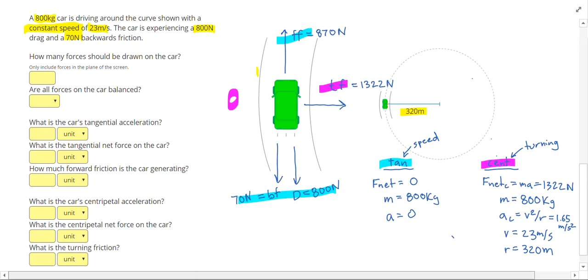Now it's just time to answer the questions on the left side. We had four forces in the plane because we couldn't draw weight or normal force. The forces are not balanced. Even though the problem says constant speed, the forces are not balanced because of that turning friction. Anytime we're moving in a curve, forces are not balanced. The car's tangential acceleration and tangential net force were zero. Forward friction was 870 newtons. The car's centripetal acceleration was 1.65 meters per second squared. Centripetal net force was 1,322 newtons. And that centripetal net force was also the same as my turning friction.